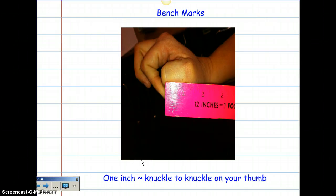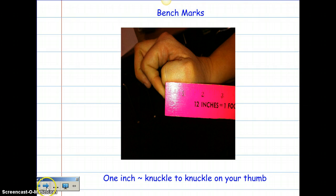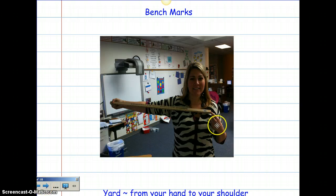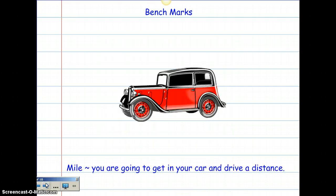Let's look at some benchmarks. A benchmark for an inch is your knuckle — you go knuckle to knuckle on your thumb. Not everybody's thumb is the same size, so this is just a benchmark measurement. A benchmark for a foot is your forearm. For a yard, it's from your hand to your shoulder — that's a yardstick. For a mile, think about how far you have to drive.